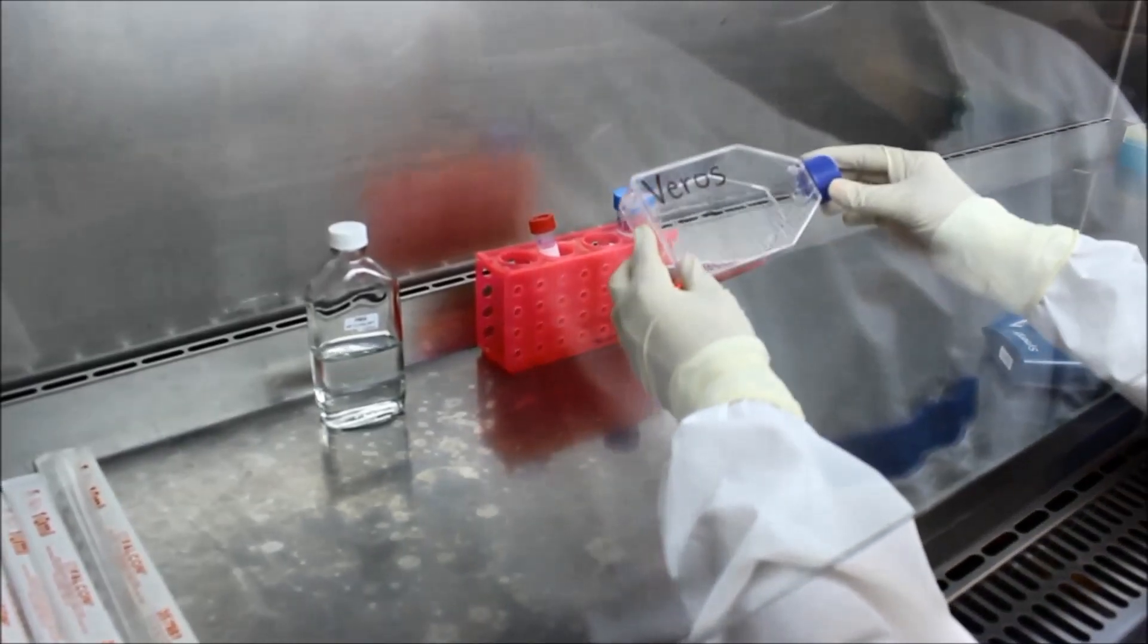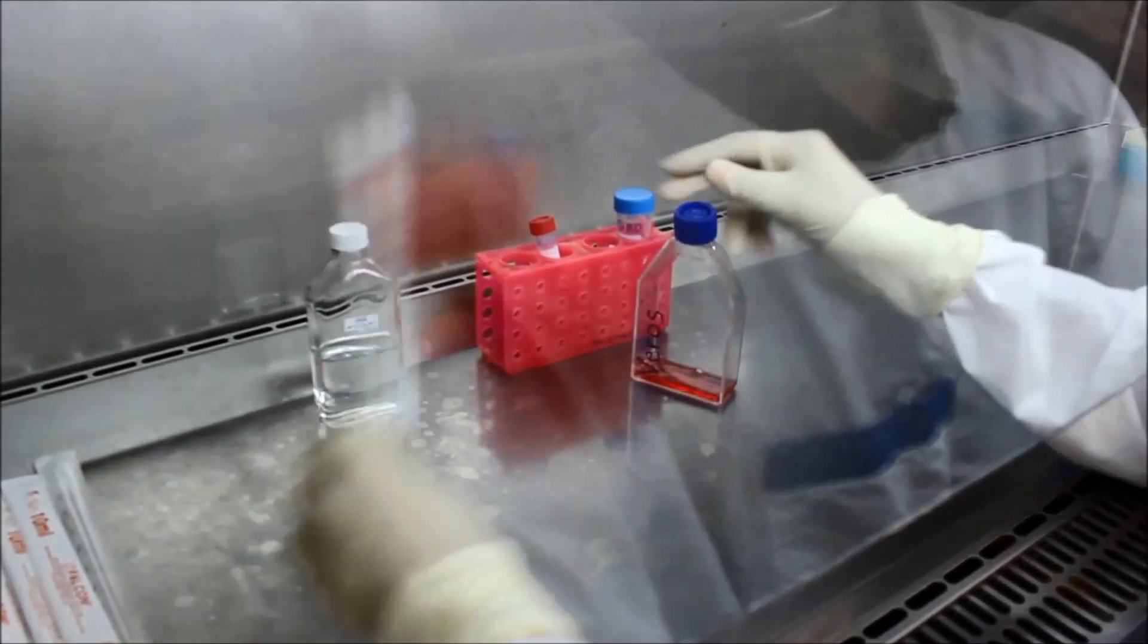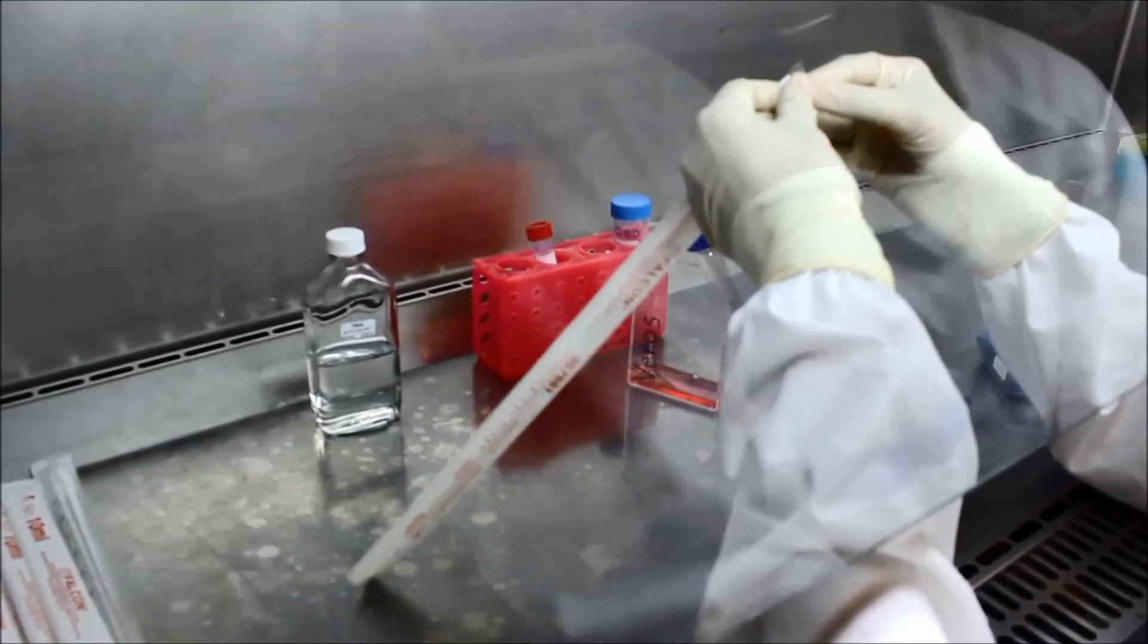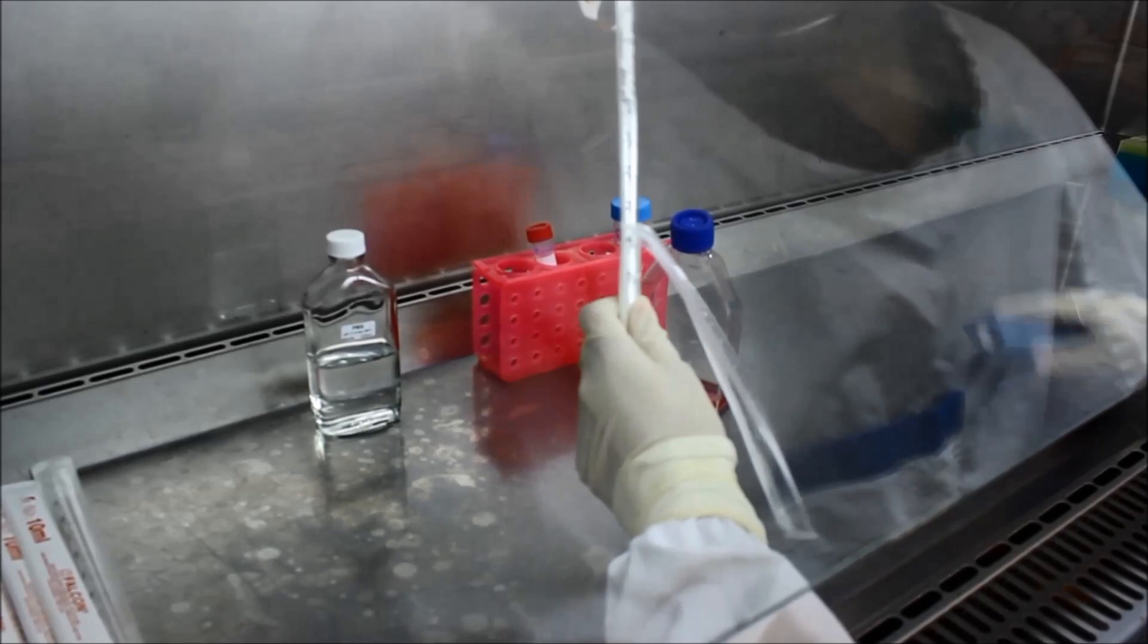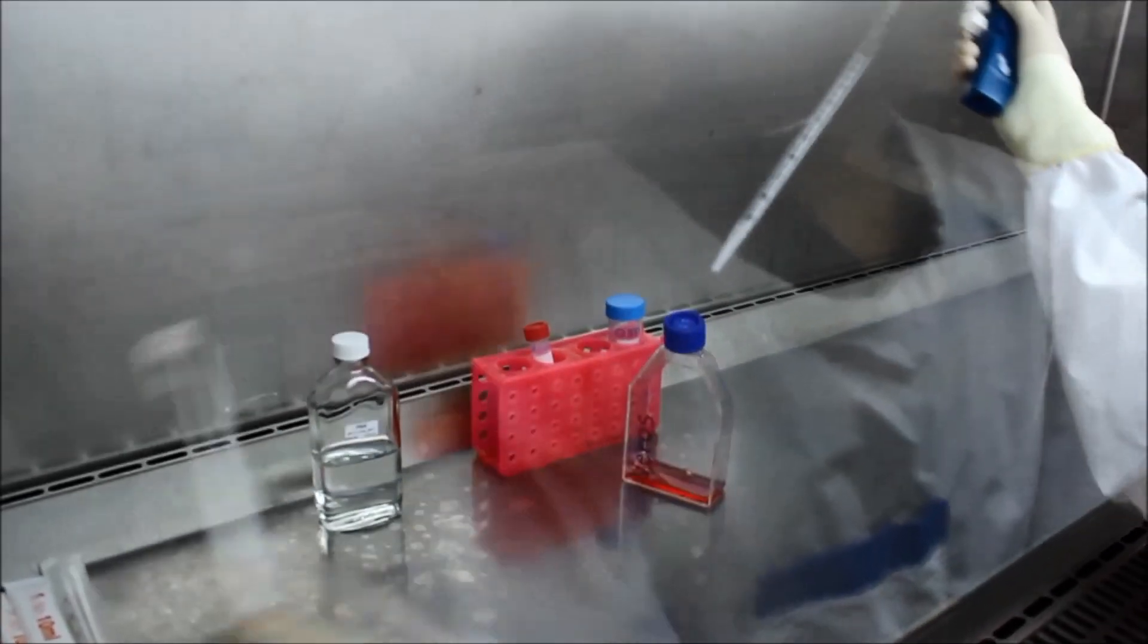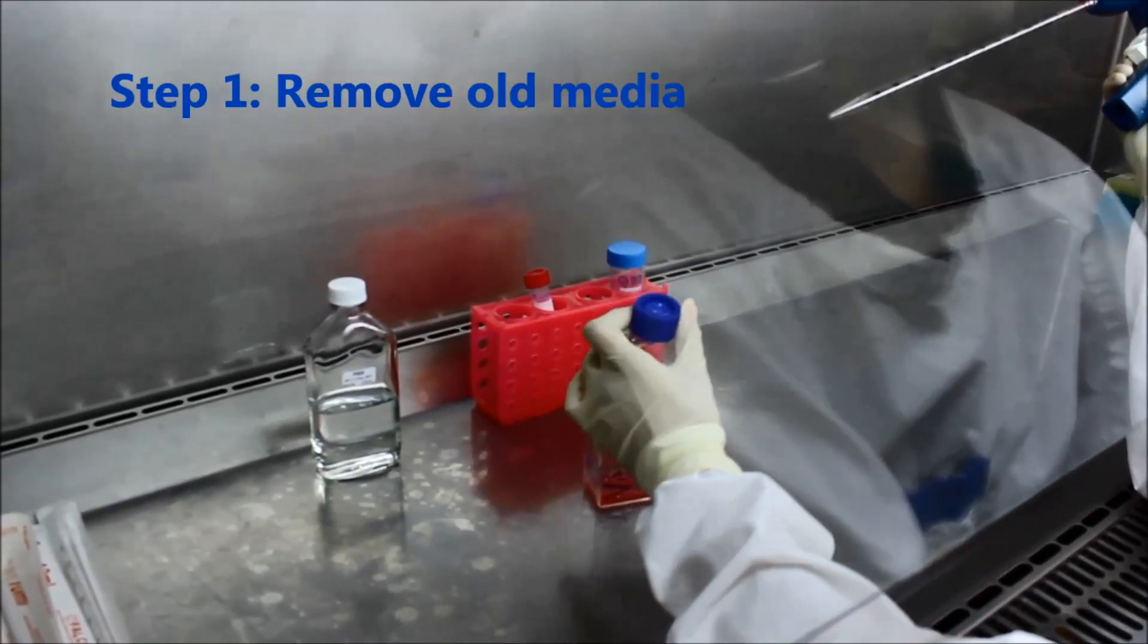Trypsinizing a flask of Vero cells. Remove the old growth medium from the flask, being careful not to drip in the neck. The Vero cells will remain attached to the base of the flask as they are an adherent cell line.